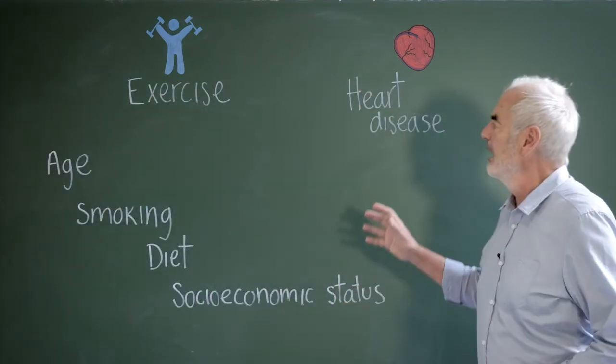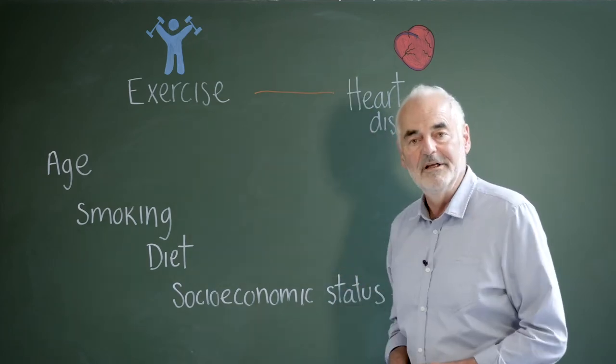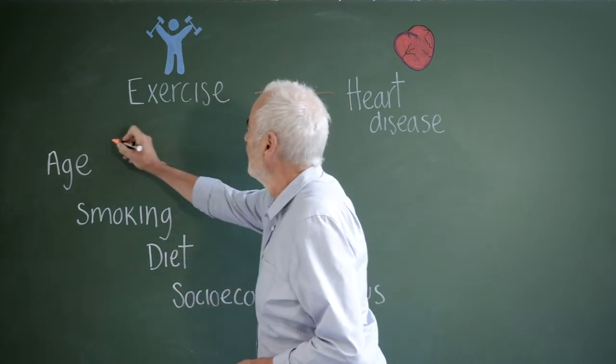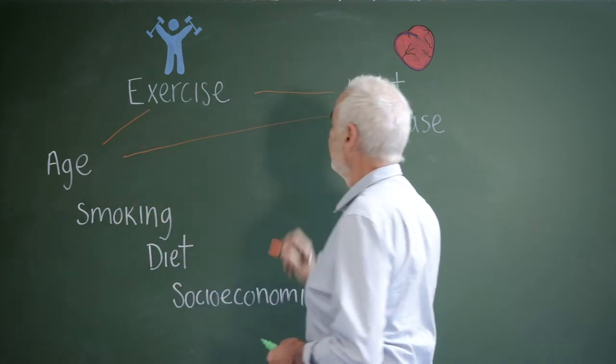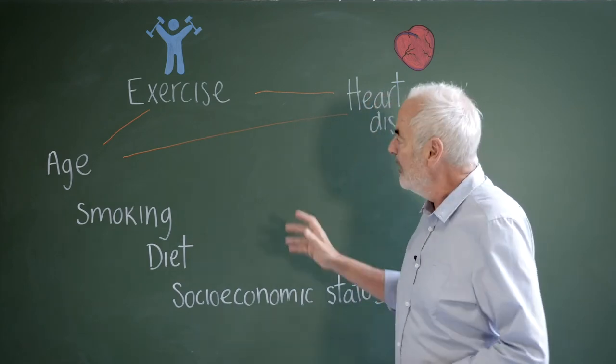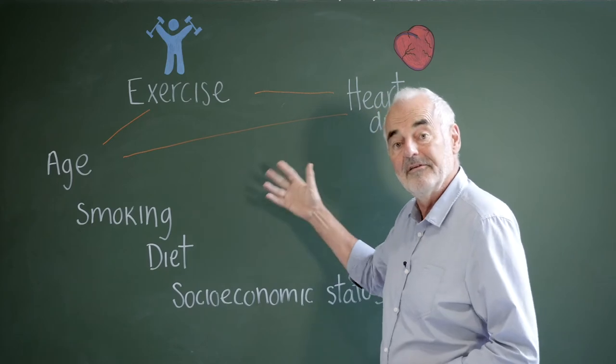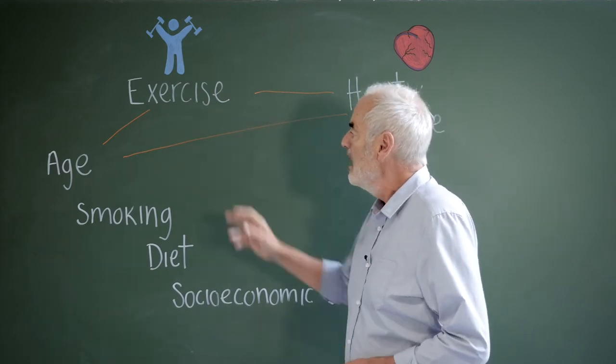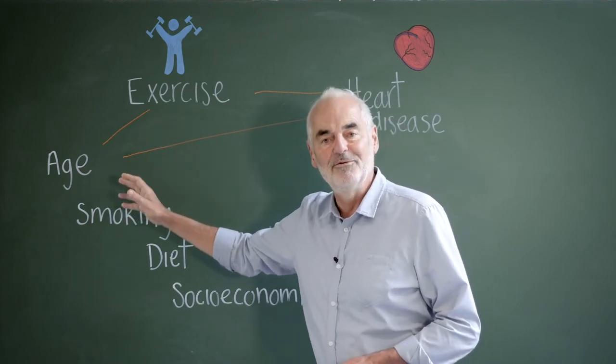Suppose we want to investigate the relationship between exercise and heart disease, but we know that someone's age might influence the amount of exercise they do and also their risk of heart disease. So unless we take age into account, it could interfere in our understanding of this direct relationship. Because of that interference, age is known as a potential confounder.